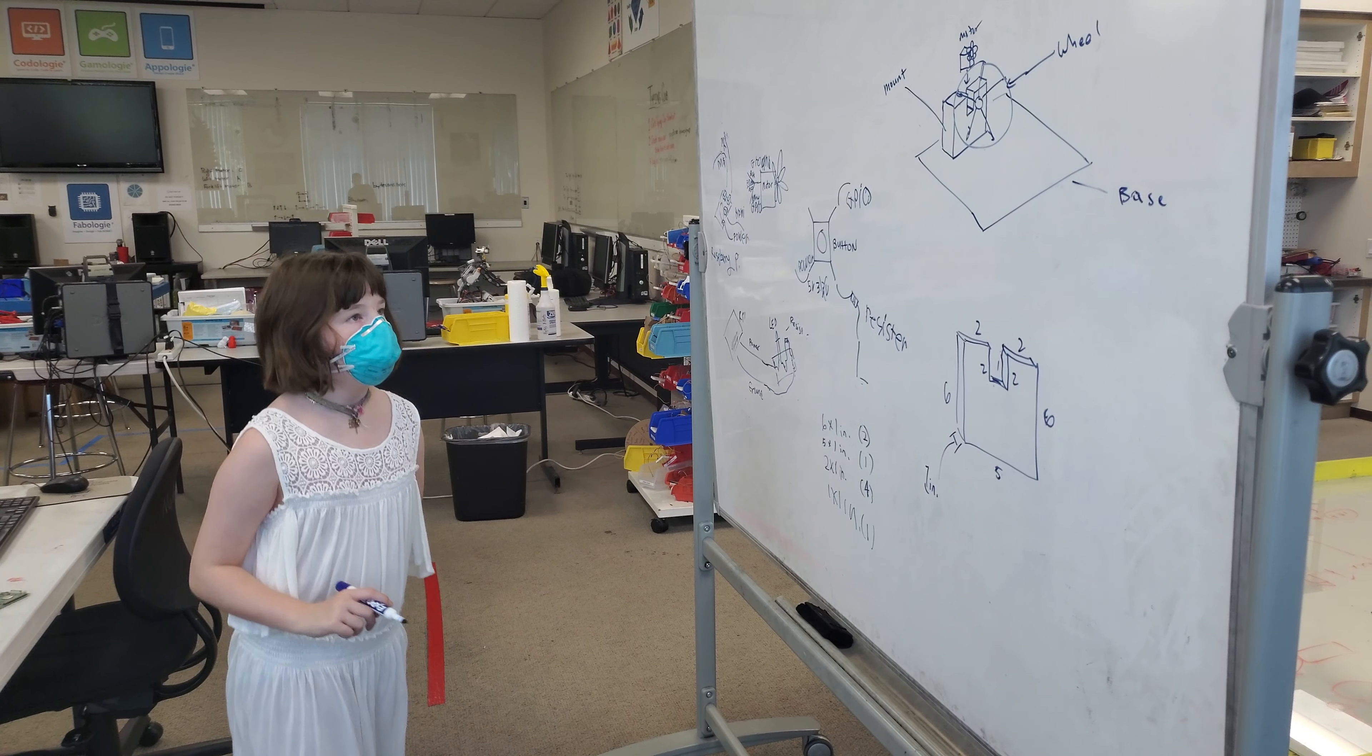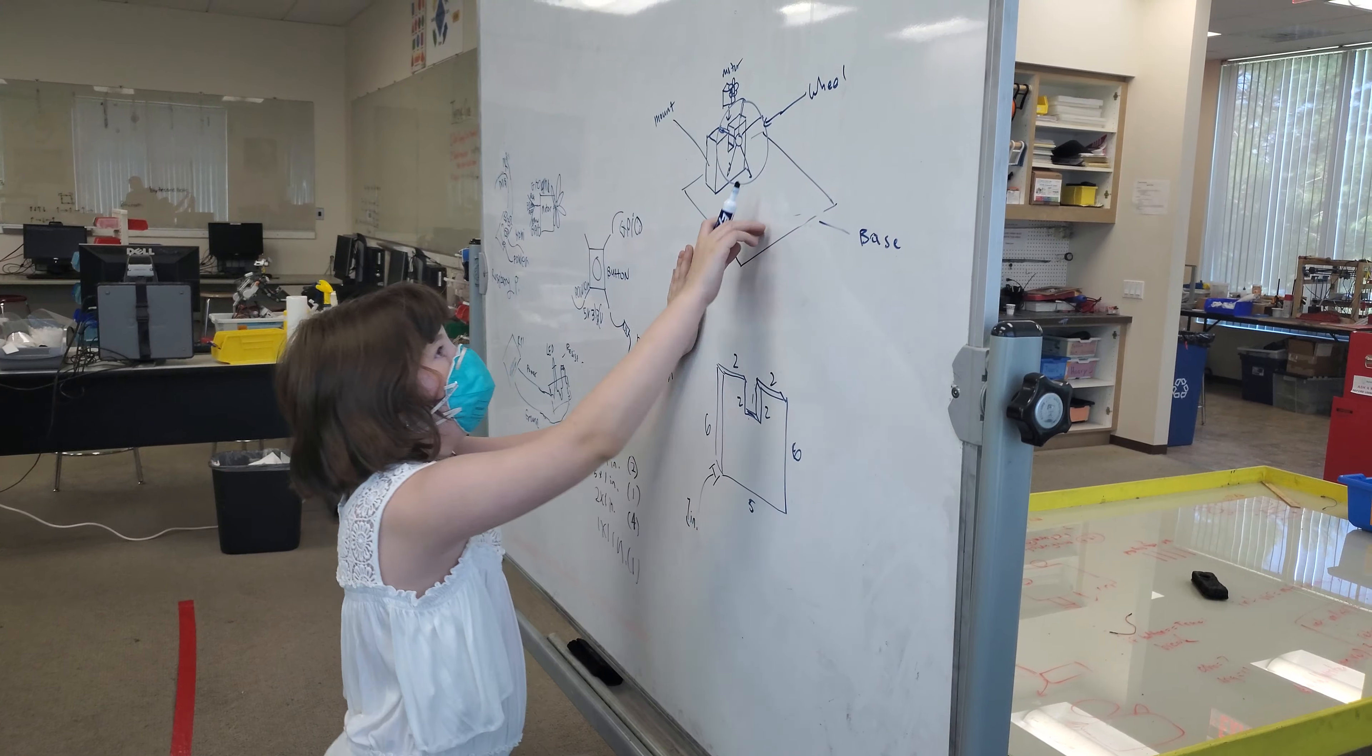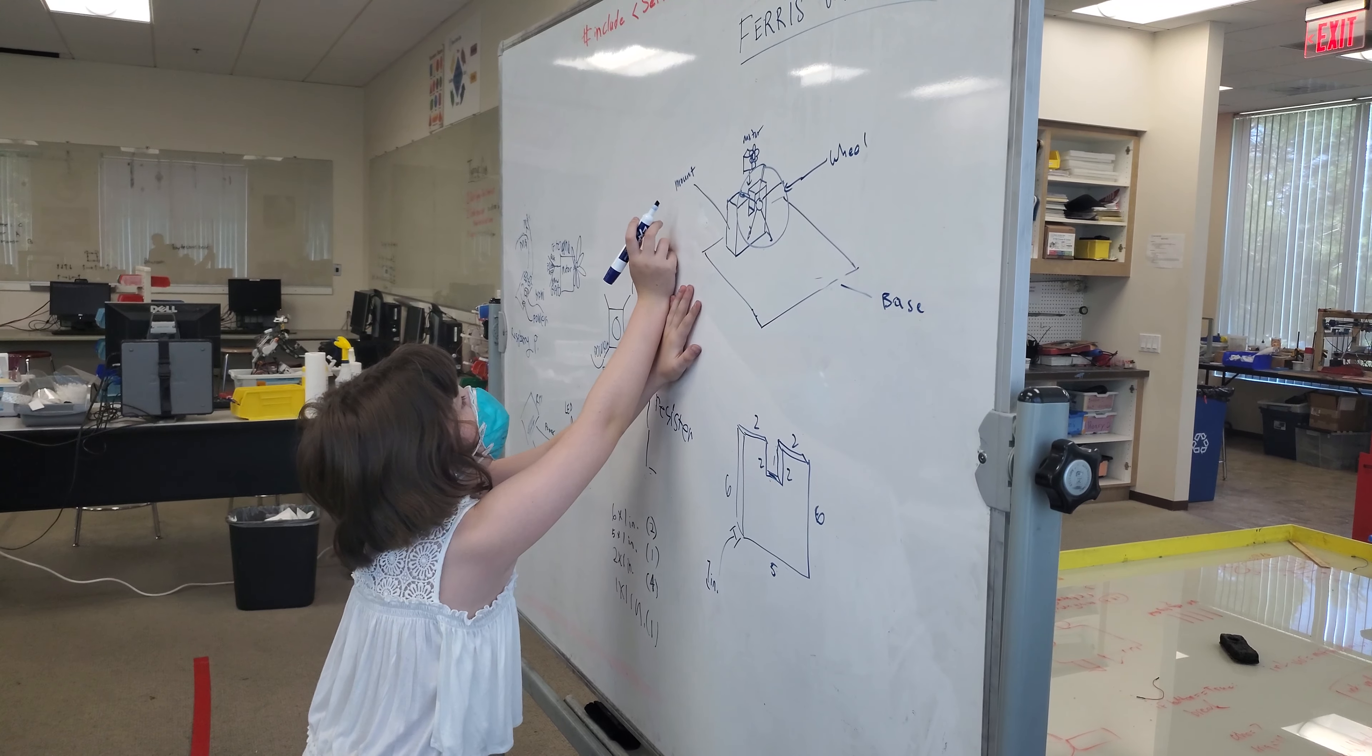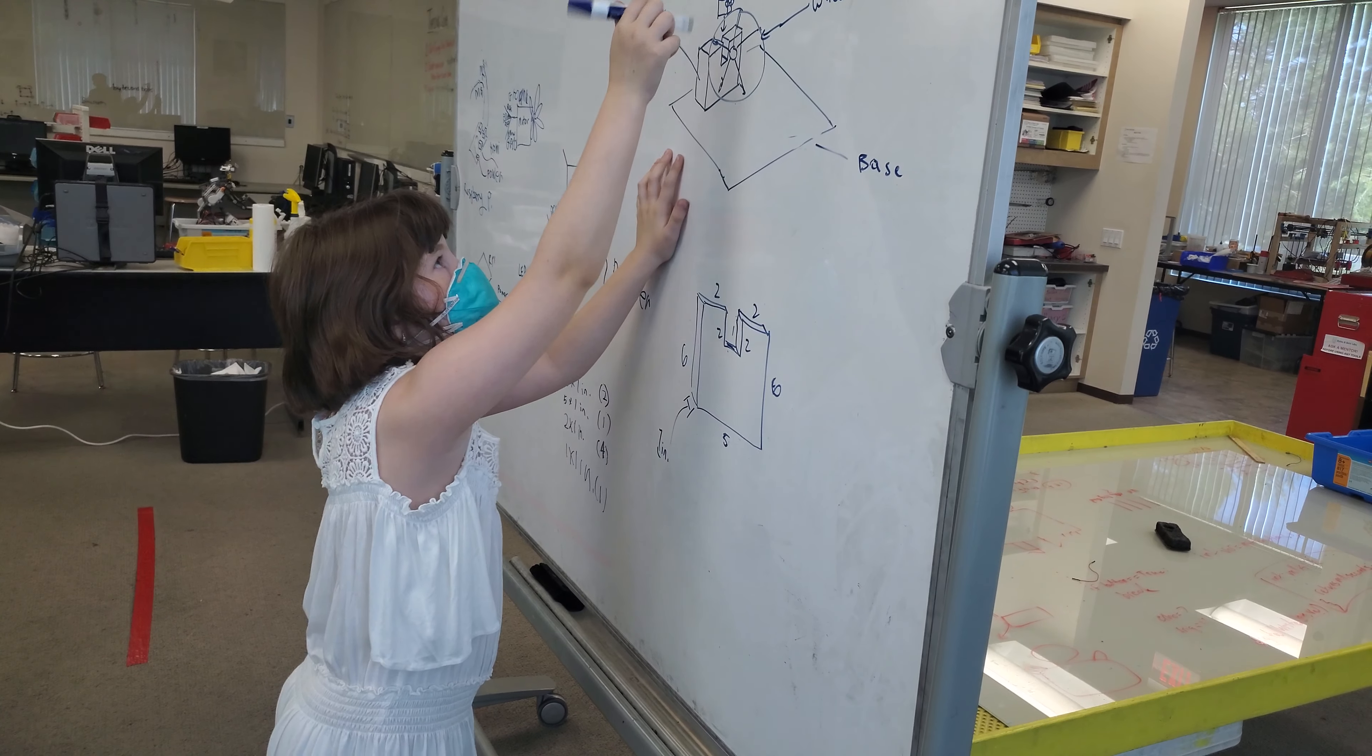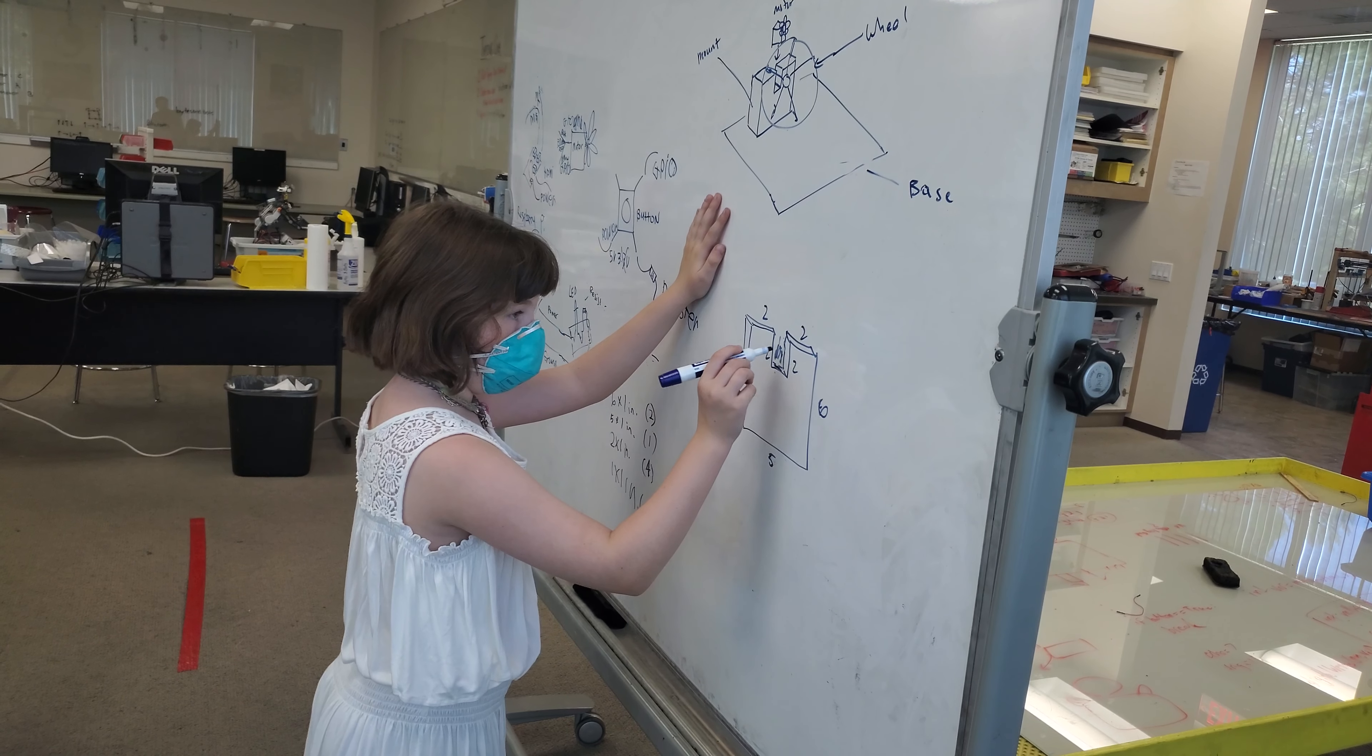And this is the base of where it will sit, the first will go in the box that will sit there. And then, this is the wheel mount. Yeah. The wheel mount. And the motor goes into here, the space. And the wheel goes onto the motor.